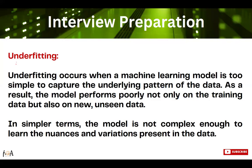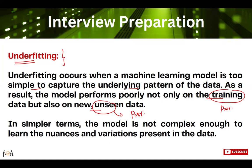Starting from the definition: whenever you hear the term underfitting, you need to answer that underfitting is a condition of a machine learning model when only very simple patterns are captured from the data. The underlying pattern of the data can only be captured at a very simple level. The model will perform very poorly on the training data as well as on new data. If the model is too simple, it will not understand complex or important patterns — that condition is called underfitting.